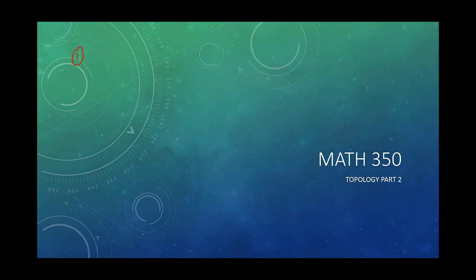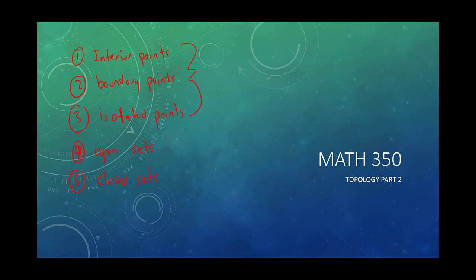We have interior points, which are points that are inside the set, not at the boundary. Then we have boundary points, which are on the boundary of the set. Then we have isolated points, which are sort of by themselves. We talked about open sets — a set is open if all of its points are interior points — and closed sets, which contain their boundary points.